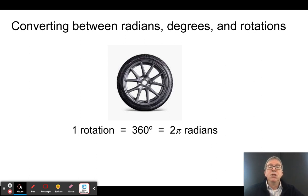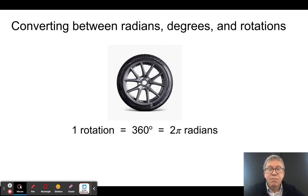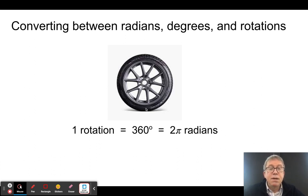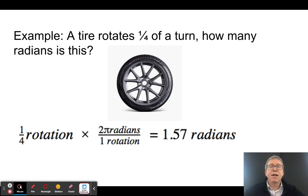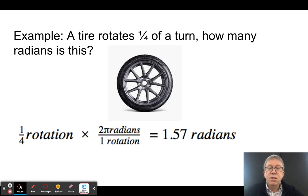Let's talk about how we convert. If I have a tire that goes through one complete rotation, one rotation equals 360 degrees, but it's also equal to two pi radians. So if a tire rotates one quarter of a rotation, I have a quarter of a rotation times two pi radians per rotation, which gives me 1.57 radians equals a quarter of a turn.